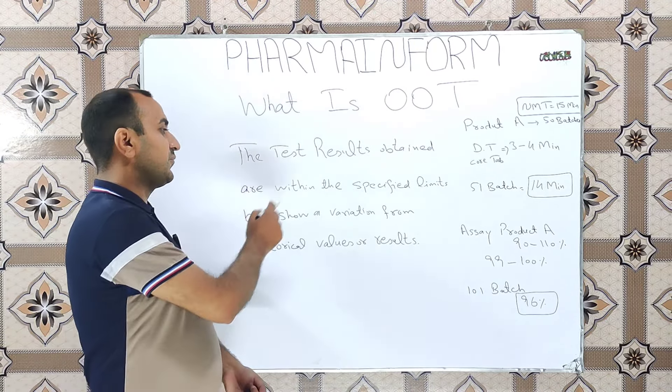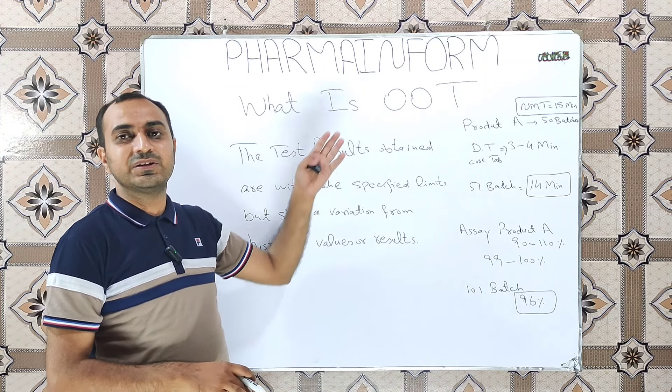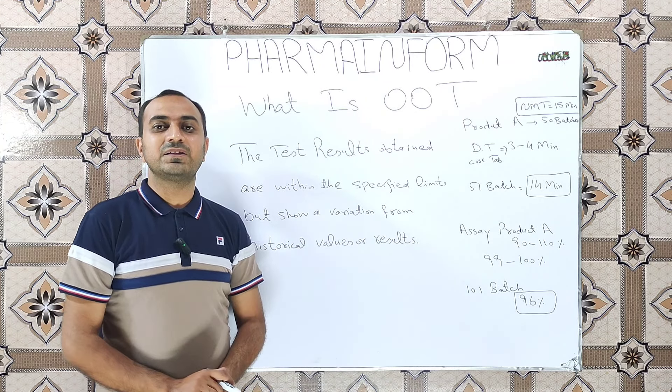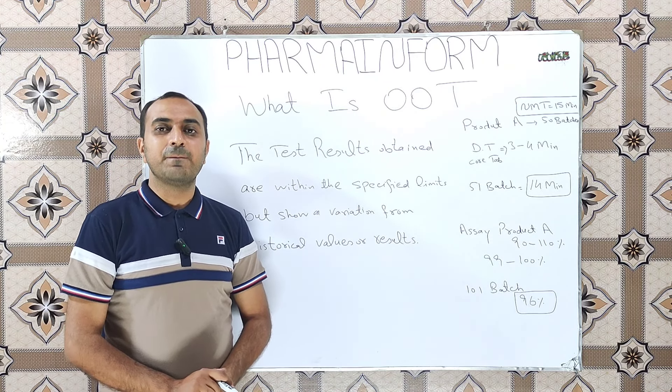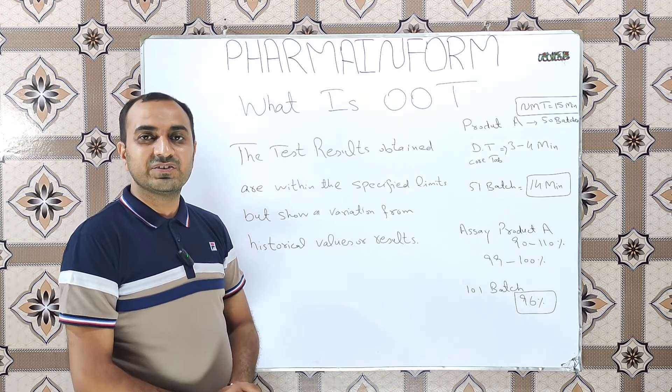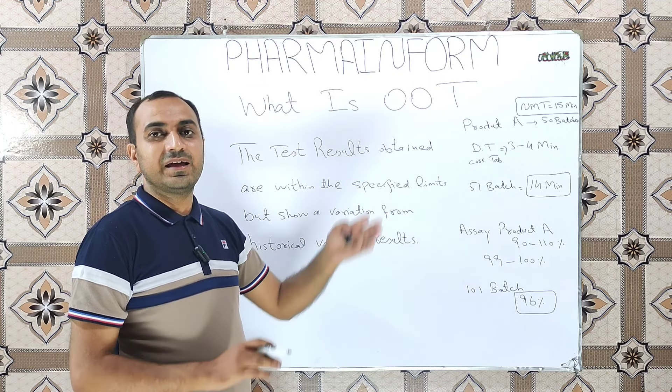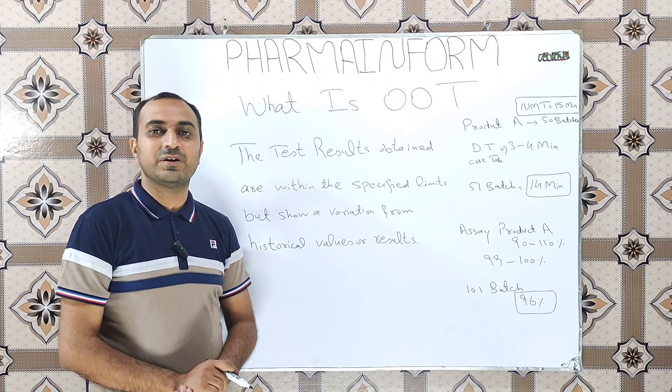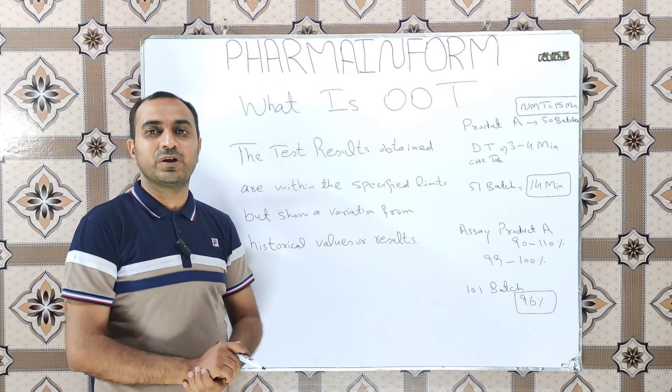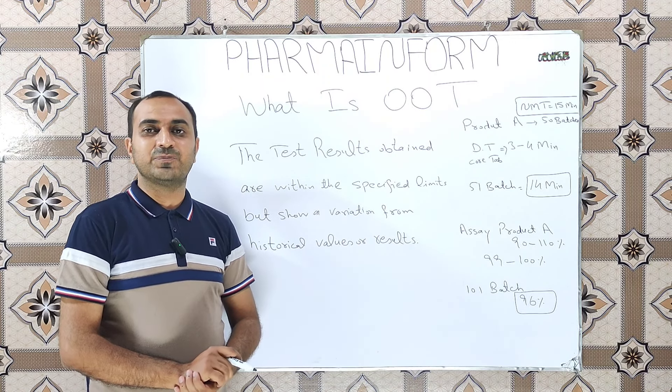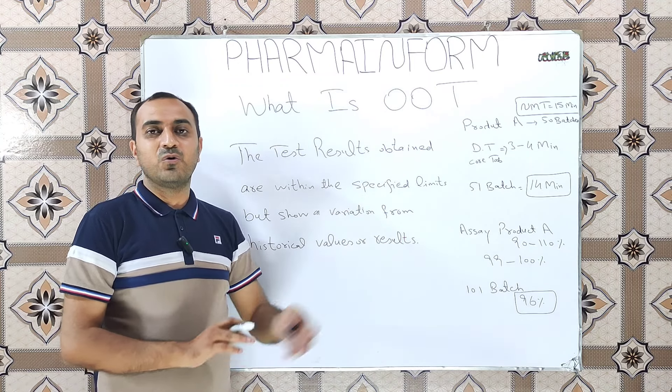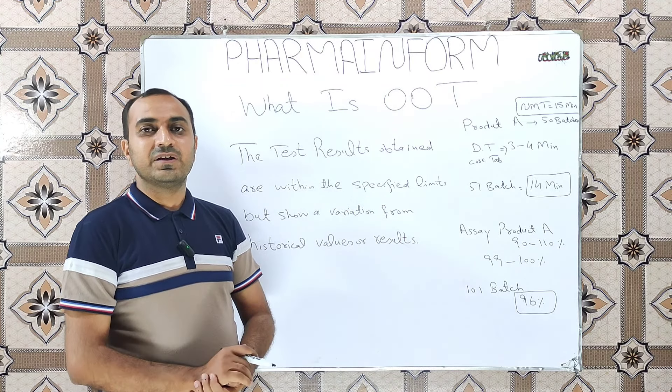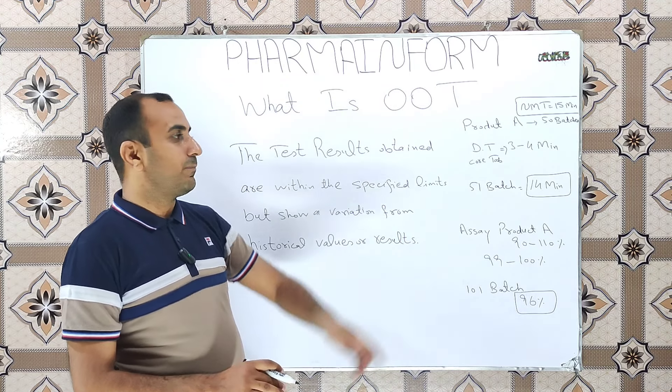In simple words, in out of trend, all the results lie within the specification but they show a variation from the previous data. We will discuss it with practical examples. Whenever we observe any abnormal behavior in the results of a product, even if they are within the specification, we carry out OOT investigation. Suppose that we have a product A.